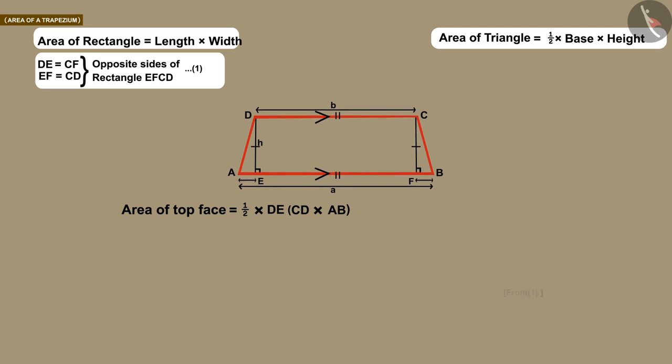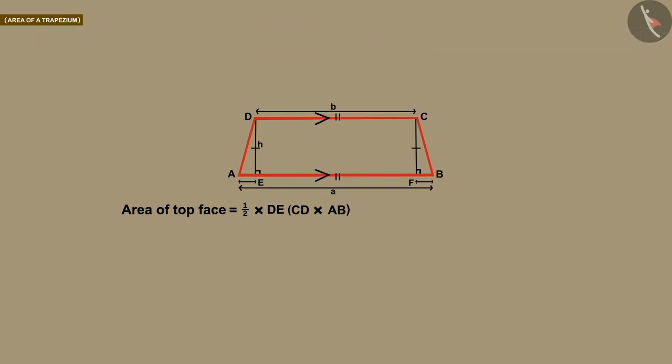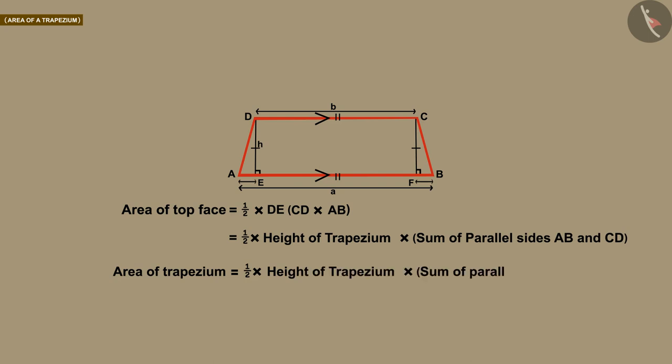This gives us this result where DE is the height of this trapezium and AB and CD are parallel sides. So we can say that the area of a trapezium is half of the product of its height and the sum of the parallel sides.